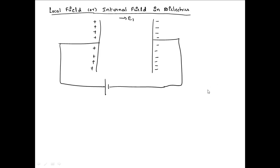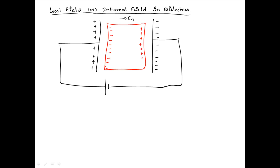Now let us place a dielectric slab in between the parallel plate capacitors. Whenever the dielectric slab is placed between the parallel plate capacitors, charges are induced on the dielectric slab. Because of that, an extra field is produced which is known as the depolarizing field, and it is in the opposite direction to E1.